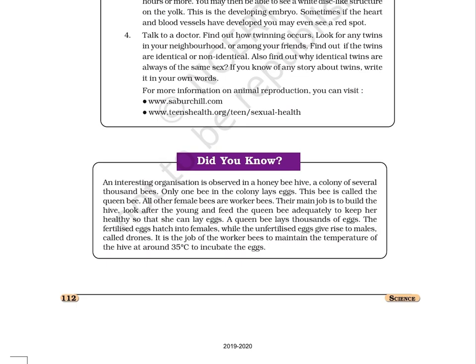Did you know? A colony of several thousand bees has only one bee that lays eggs — this bee is called the queen bee. All other female bees are worker bees whose main job is to build the hive, look after the young, and feed the queen bee so she can lay eggs. A queen bee lays thousands of eggs. The fertilized eggs hatch into females, while the unfertilized eggs give rise to males called drones. It is the job of the worker bees to maintain the temperature of the hive at around 35 degrees Celsius to incubate the eggs. Chapter 9 ends here.